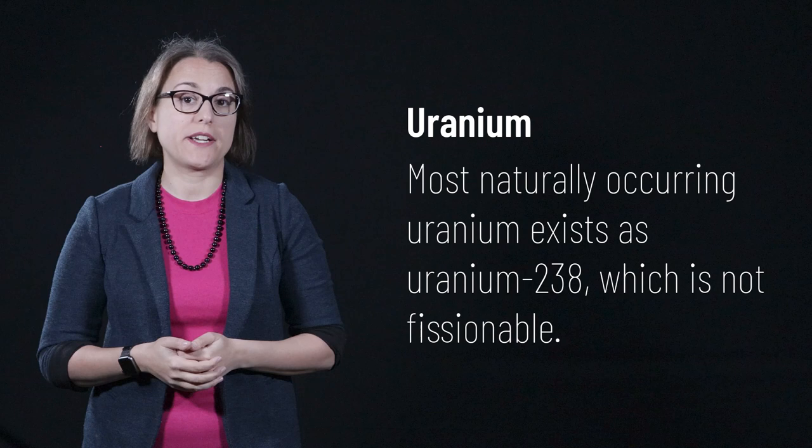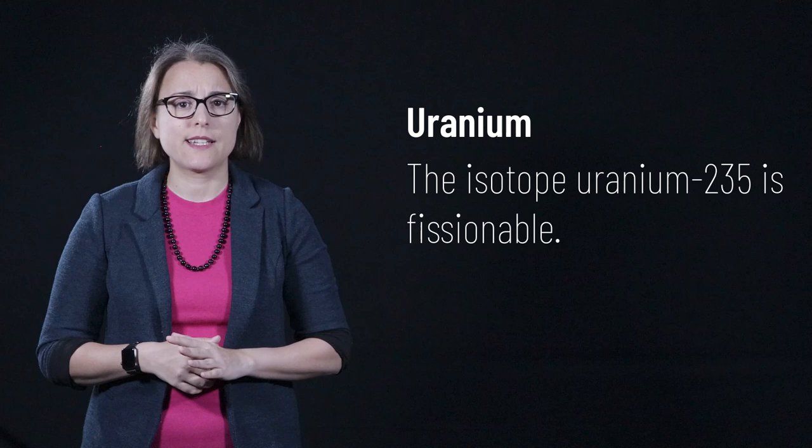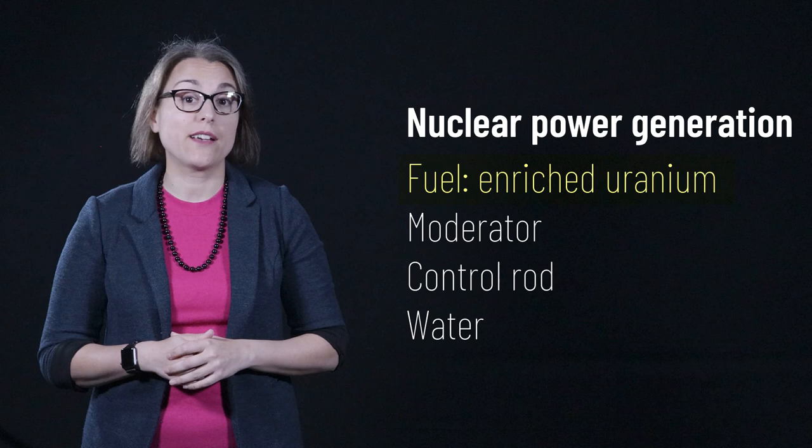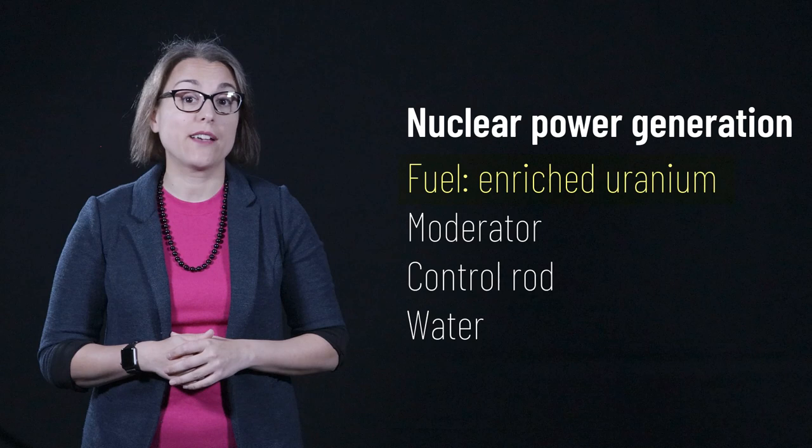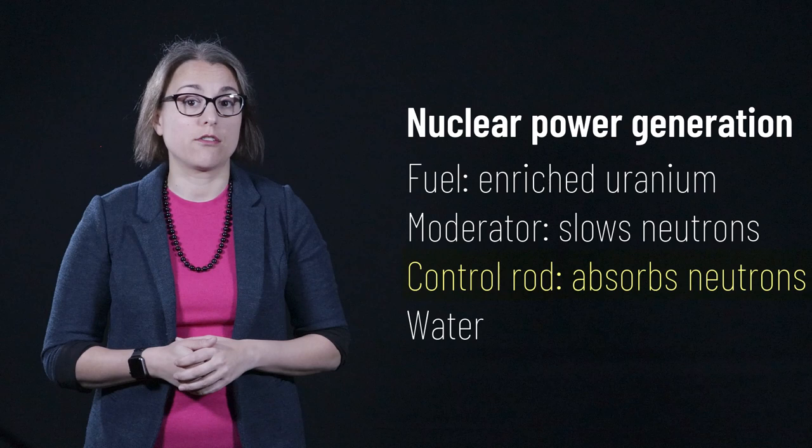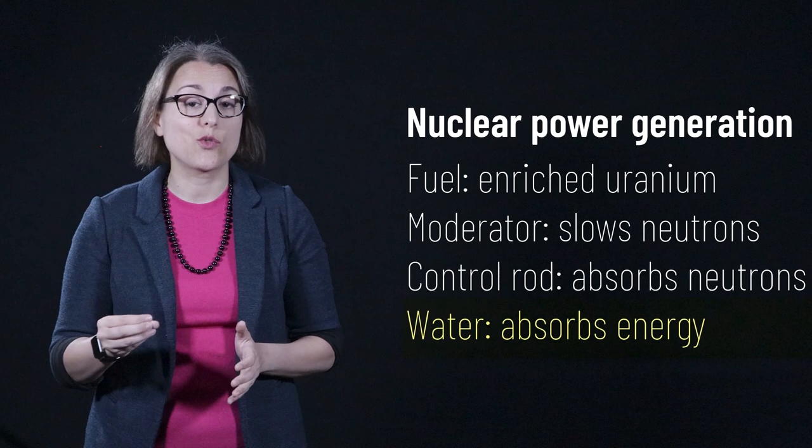Most natural sources of uranium consist of the isotope uranium-238, which is not fissionable. Samples of uranium-238 will naturally contain some uranium-235, which is fissionable. Enrichment is a process by which the proportion of uranium-235 is increased. Nuclear power plants use enriched uranium as a fuel to create a critical chain reaction. A moderator is used to slow down neutrons until they travel at the right speed to cause fission in uranium-235. Control rods are used to absorb excess neutrons and prevent a supercritical reaction from occurring. Water runs through the reactor and heats up as it absorbs the energy generated by the fission reaction.